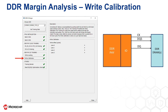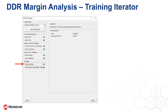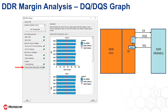Right calibration aligns DQS with respect to DQ at the memory. This is the last step in the training process, where known patterns are written to memory and then read back. The DQ bits are adjusted by a series of output delay taps until the expected pattern is read back. The value shown is the number of clock cycles DQS was pushed until the correct pattern was read. The training iterator view indicates that the training process has completed, as well as the time it took to complete.